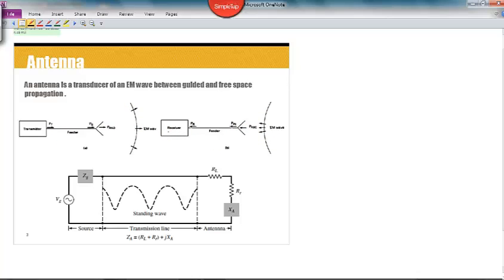In the transmitting mode, a generator with source impedance ZG sends a voltage and current wave along a transmission line that has a characteristic impedance of Z0. The antenna is going to act as a load, and it's connected to the T-line, and it's got a characteristic impedance typically of what we call ZA.